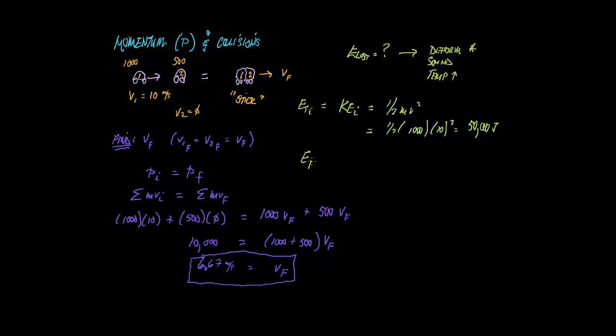And the energy final will be both vehicles, still kinetic. So that's going to be half 1,500, because it's the two vehicles, times 6.67 squared. That gives us 33,350 joules. That tells us how much energy after.